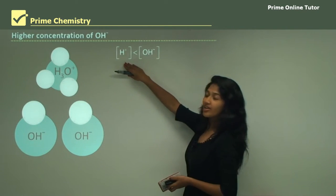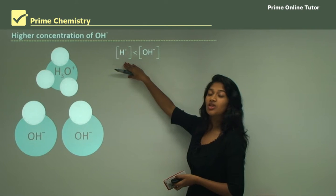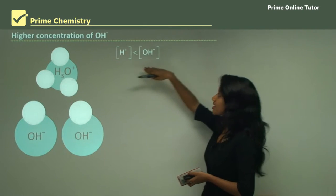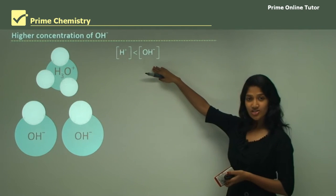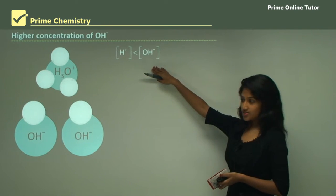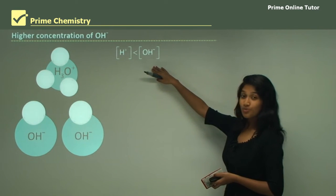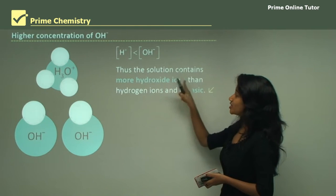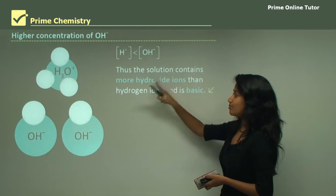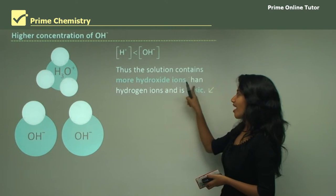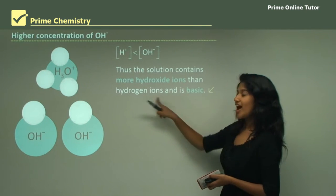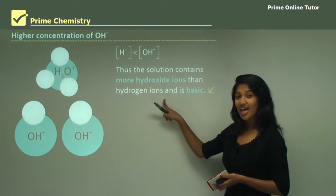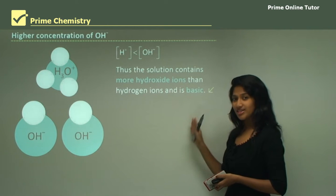So our hydrogen ion concentration is less than our hydroxide ion concentration, meaning the solution contains more hydroxide ions than hydrogen ions and is therefore basic.